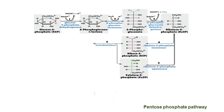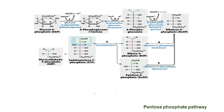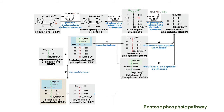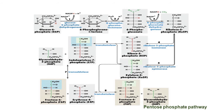Transketolase can convert ribose 5-phosphate and ribulose 5-phosphate into glyceraldehyde-3-phosphate and fructose 6-phosphate. Transketolase can also catalyze the conversion of xylulose 5-phosphate and erythrose 4-phosphate into glyceraldehyde-3-phosphate and fructose 6-phosphate. All these reactions of the non-oxidative phase are reversible in nature.